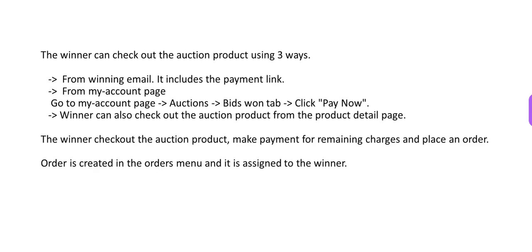The winner can check out the auction product using three ways: first, from the winning email which includes the payment link; second, from the My Account page; and third, from the product detail page. The winner checks out the auction product, makes a payment for remaining charges, and places an order. The order is created in the Orders menu and assigned to the winner.